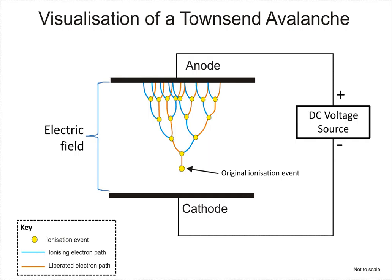An ion is an atom or molecule that has a non-zero net electrical charge. Since the charge of the electron is equal and opposite to that of the proton, the net charge of an ion is non-zero due to its total number of electrons being unequal to its total number of protons. A cation is a positively charged ion with fewer electrons than protons, while an anion is negatively charged with more electrons than protons. Because of their opposite electric charges, cations and anions attract each other and readily form ionic compounds.